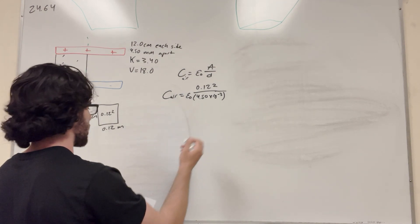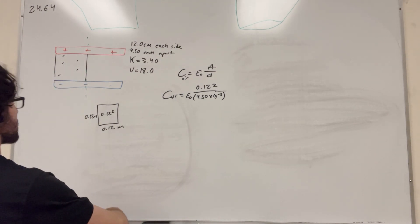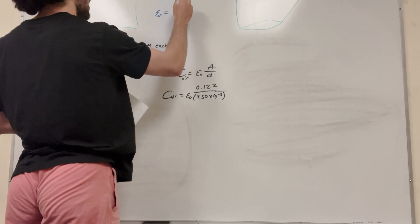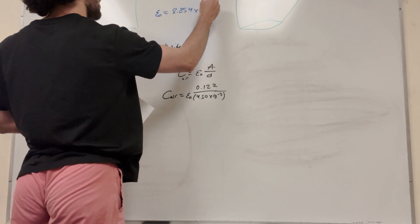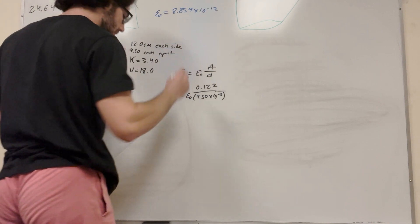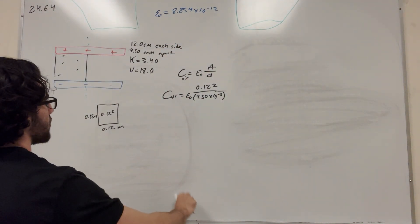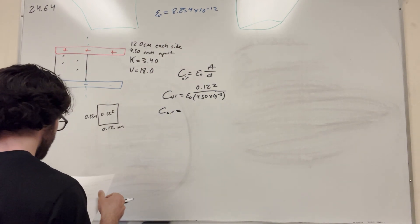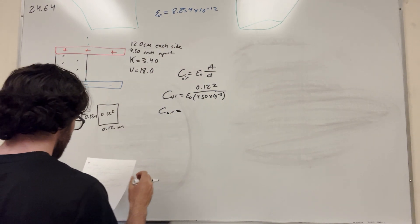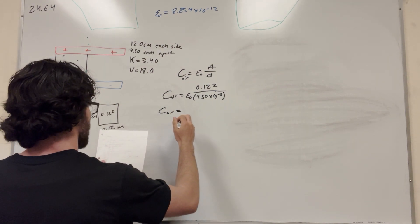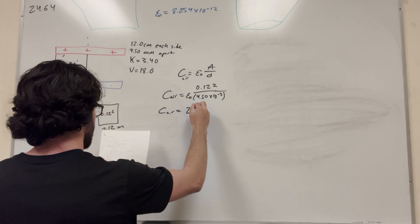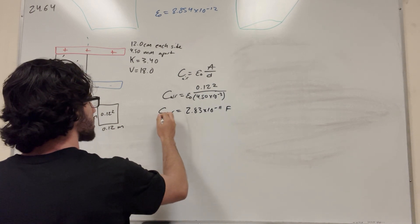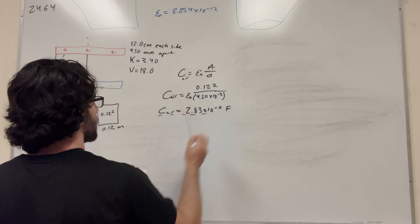Epsilon-naught is equal to 8.854 times 10 to the negative 12. If we plug these numbers in, we're going to get the capacitance of air equal to 2.83 times 10 to the negative 11 farads. That's a useful number we're going to need.